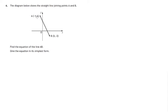Here we have two points A and B. We're given the coordinates and we're asked to find the equation of the line joining A and B. There are several methods of doing this — let's look at the first one.